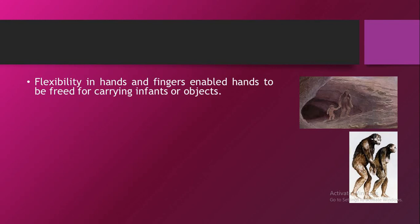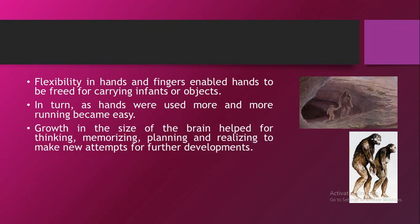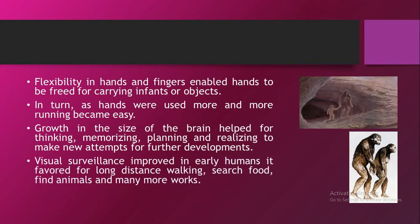Flexibility in hands and fingers enabled hands to be freed for carrying infants or objects. As hands were used more and more, running became easier. Growth in the size of the brain helped for thinking, memorizing, planning and making new attempts for further developments. Visual surveillance improved in early humans and favoured long distance walking, search for food, finding animals and many more activities.